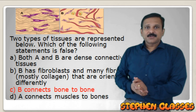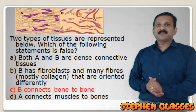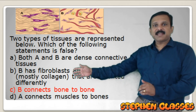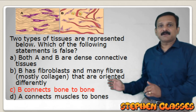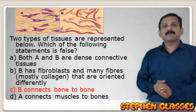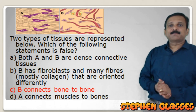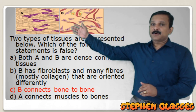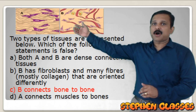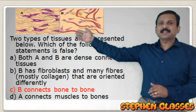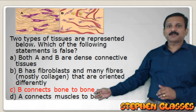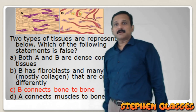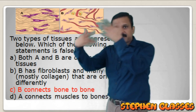The question asks which statement is false. Option A: A and B are dense connective tissues - correct. Option B: B has fibroblasts and many collagen fibers oriented differently - correct. Option C: B connects bone to bone - wrong, because diagram B is irregular dense connective tissue (white fibrous tissue), not ligament; only ligament connects bone to bone. Option D: tendon connects skeletal muscle with bone - correct. So the false statement is C.